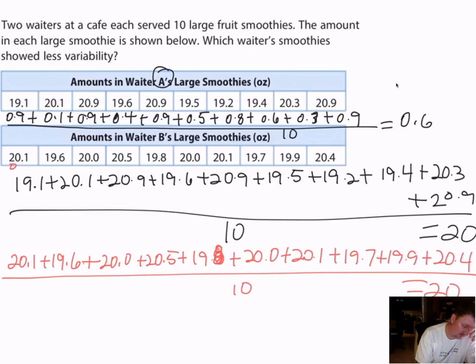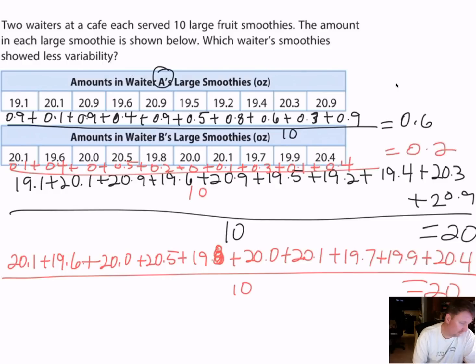But 20.1 from 20 is 0.1. 19.6 from 20 is 0.4. 20 from 20 is 0. 20.5 is 0.5. 19.8 is 0.2. 20 is 0. 20.1 is 0.1. 19.7 is 0.3. 19.9 is 0.1. And then 20.4 is 0.4. So if I add all those together and I divide by ten, I wind up with 0.2.